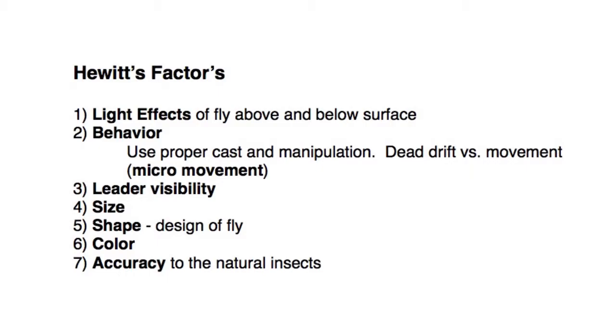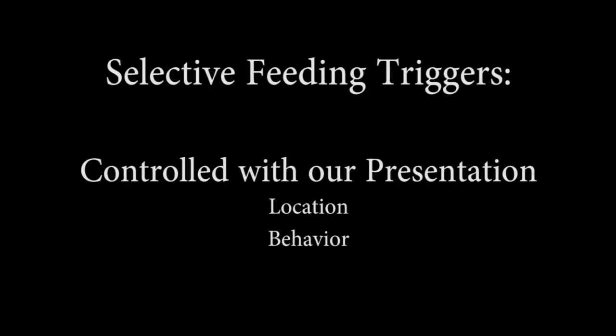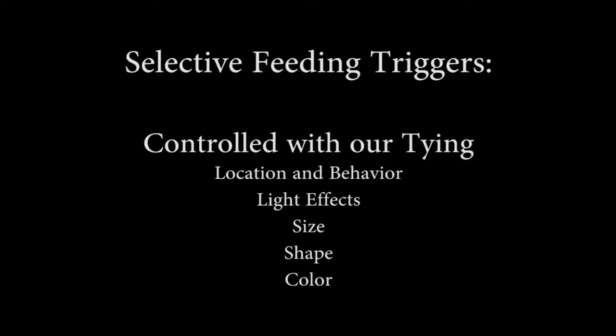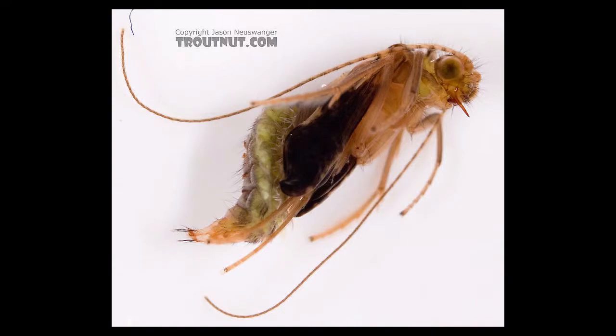Let's look at how we can control these factors. Some features are best controlled with our presentation — what water type and where in the water column we want to fish the flies, controlled predominantly by our casting. During and after the cast, we may manipulate the fly, causing variable behavior. Our tying also controls many of these factors. We can use heavy hooks and even weight them to fish near the bottom. Our choice of materials affects micro-movement, and light effects, size, shape, and color are controlled by our tying. So let's tie some flies that we can use as a caddis pupa.